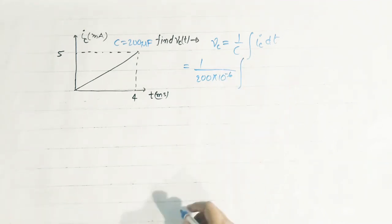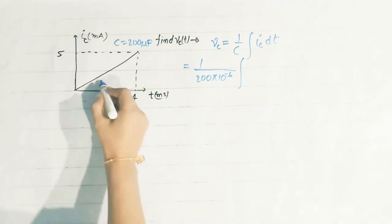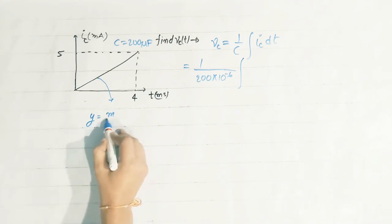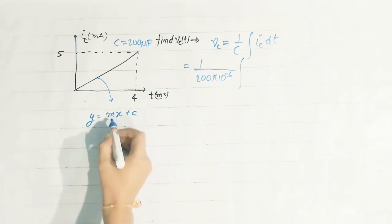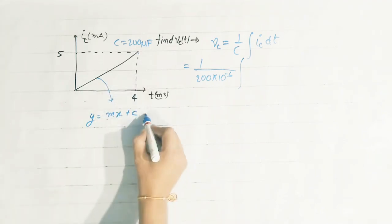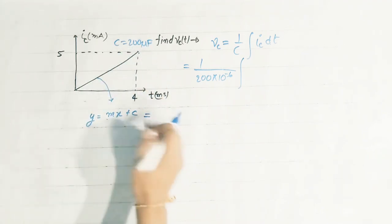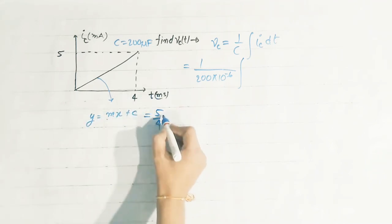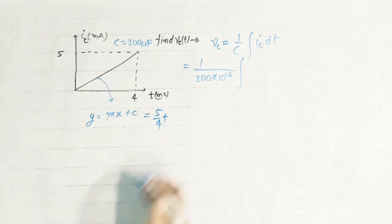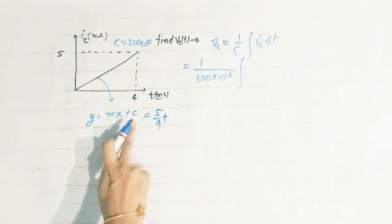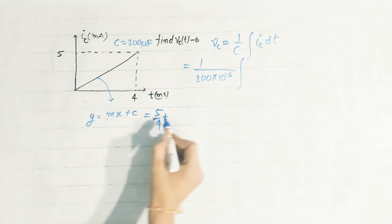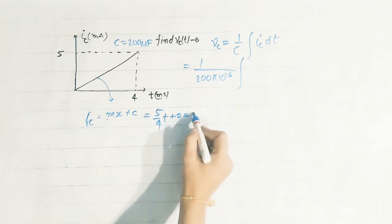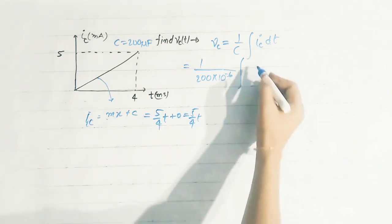Now, for the capacitor current, this waveform is a straight line. We write the equation of a straight line as y equals mx plus c. The slope equals perpendicular upon base, so that is 5 upon 4. The x-axis is the time axis, and the y-intercept is 0. So the equation of capacitor current ic equals (5/4)t.